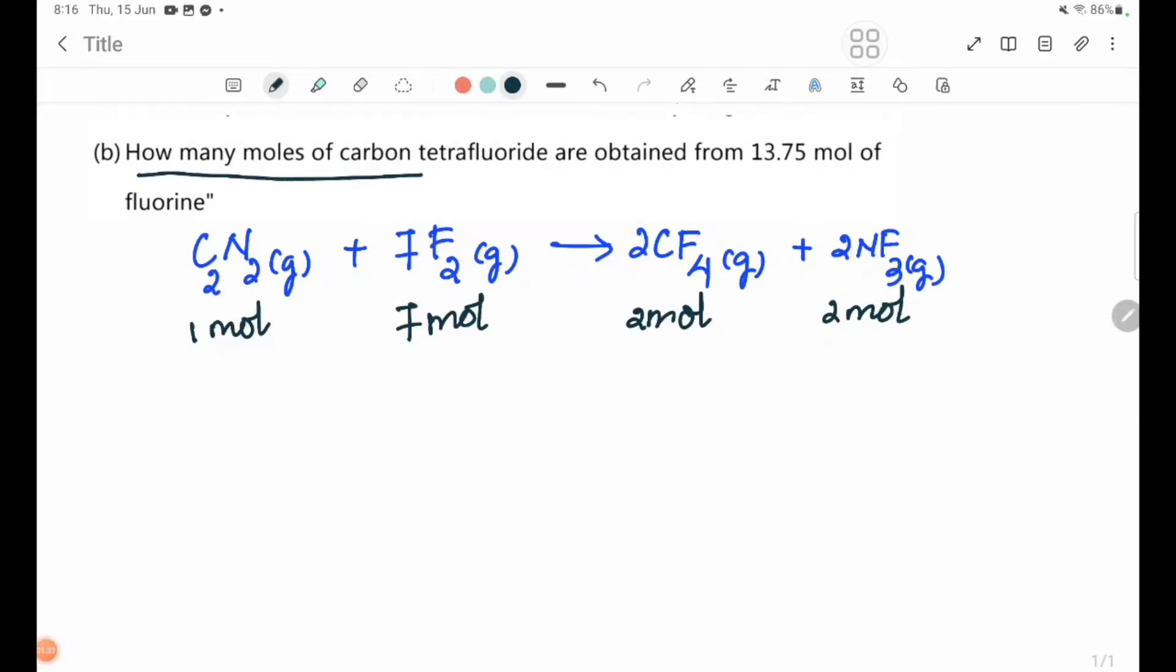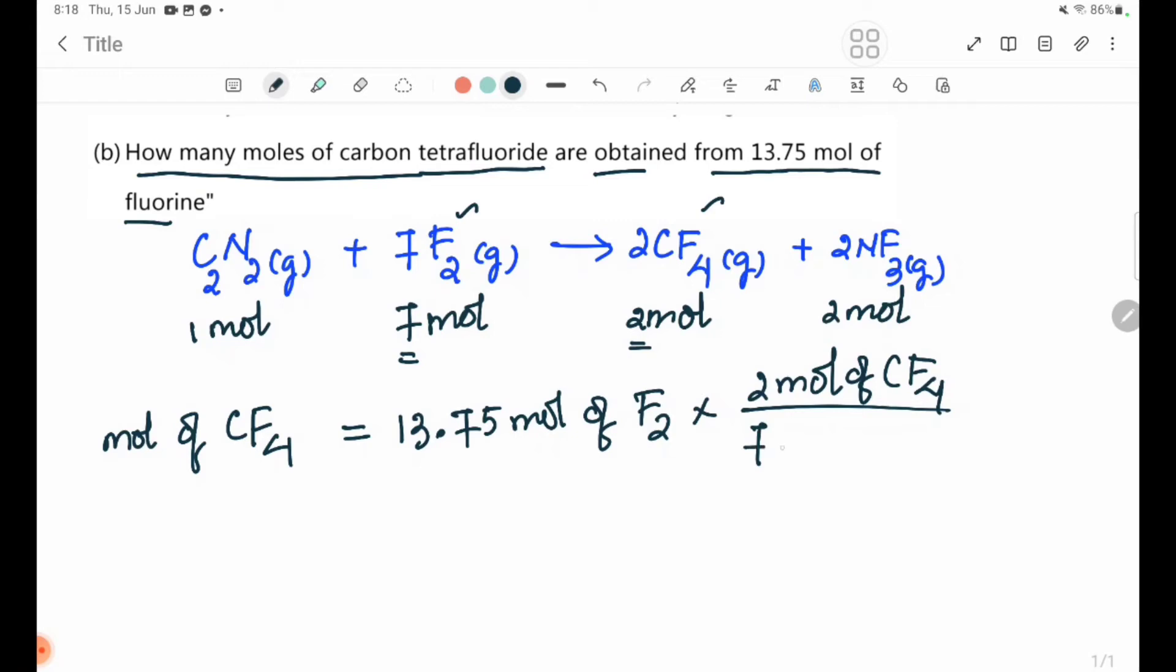Part (b): How many moles of carbon tetrafluoride are obtained from 13.75 mol of fluorine? From the equation, 7 mol F2 produces 2 mol CF4. So 13.75 mol F2 produces 2 times 13.75 divided by 7, which equals 3.93 moles of CF4.